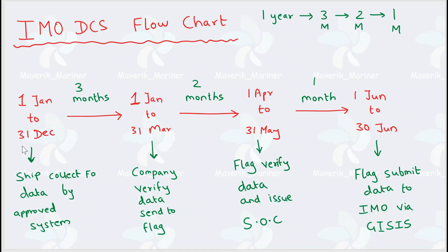To summarize the cyclic process: 1 year — ship collects data; 3 months — company verifies and sends data to flag; 2 months — flag verifies and issues SOC; 1 month — flag submits data to IMO via GISIS.